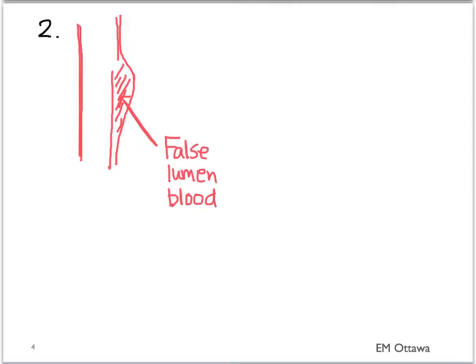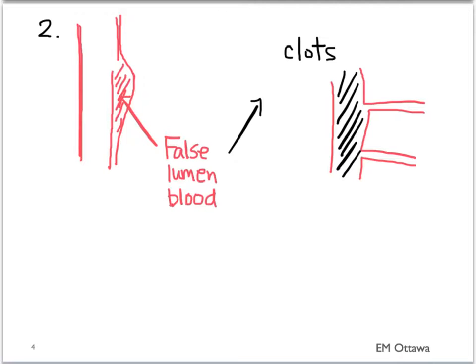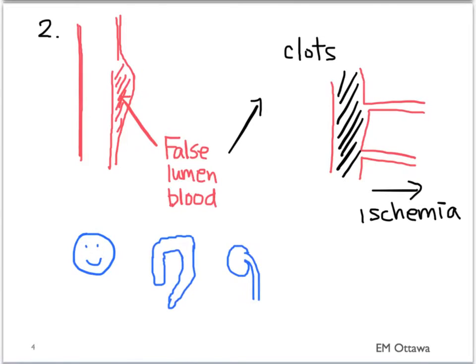Number two: let's look at the blood in the false lumen. Often, the blood in the false lumen clots. When the major arteries come off the aorta, those coming off the section with the dissected flap will be full of clotted blood, and therefore are leading to ischemia to wherever these major arteries are leading to. That leads to infarctions of various organs, ranging from the brain, the GI tract, the kidneys, and so on.